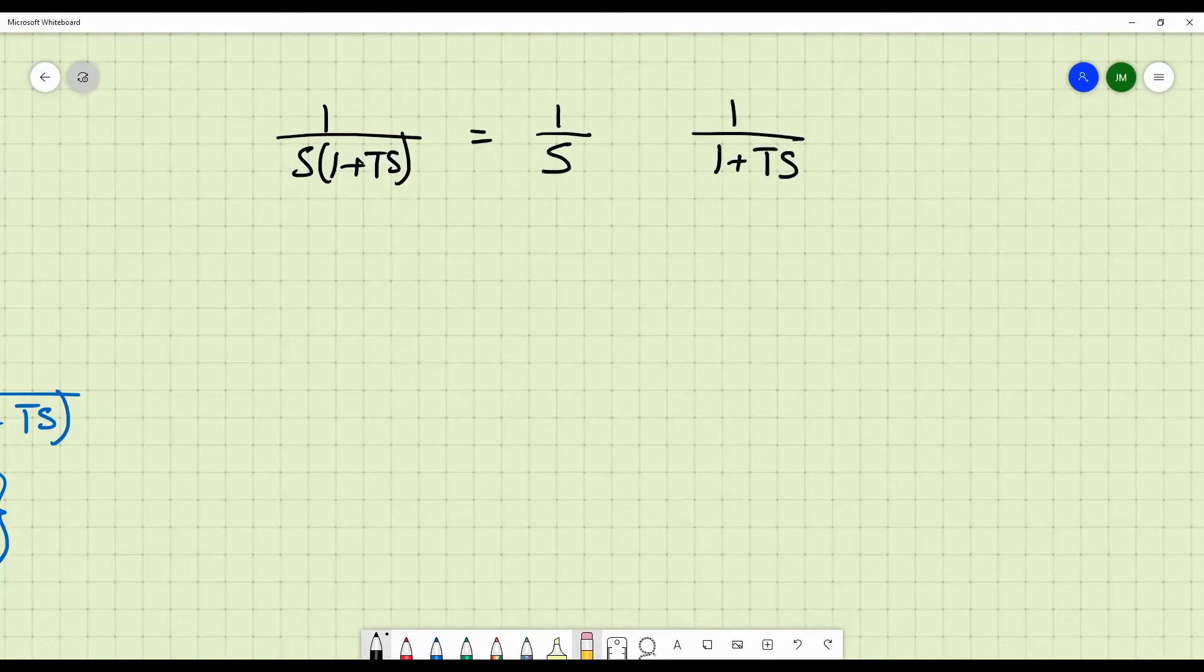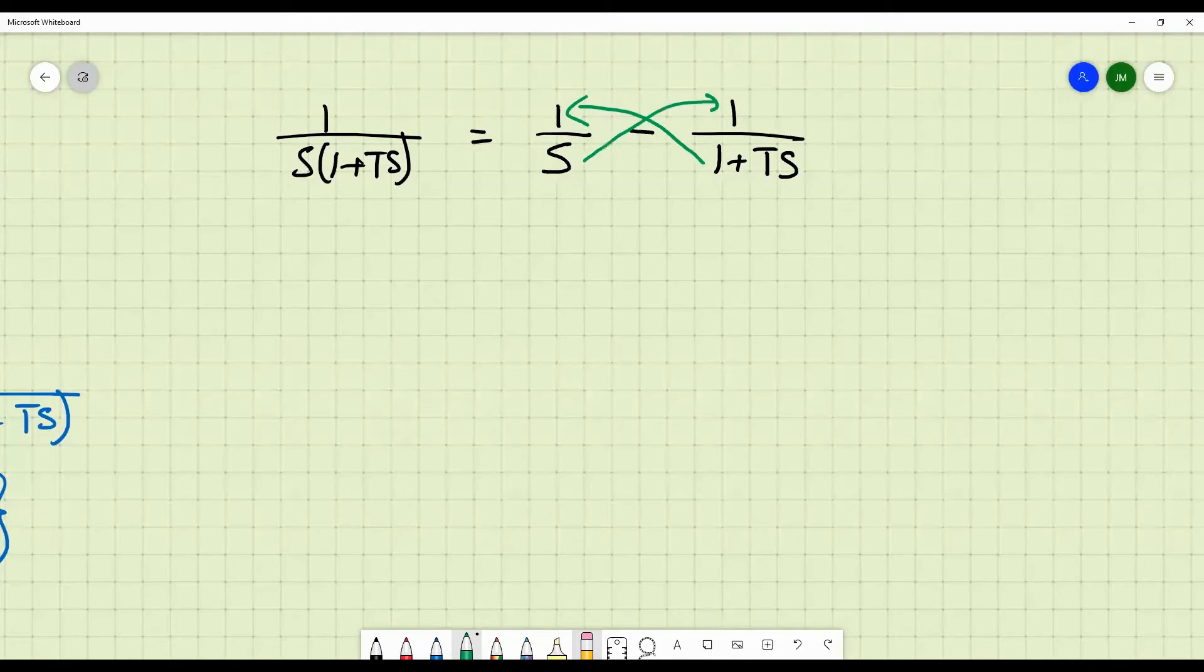Now, you put a minus sign. Why do you need to put a minus sign? Because this 1 plus T S, if you cross multiply, you take the LCM and try to simplify, 1 plus T S will go to the numerator here and S will go to the numerator here. And if you have a minus sign, it is only then that the S term will get cancelled out. Because in the numerator, we don't want any S term.